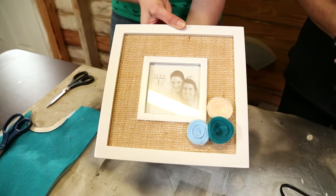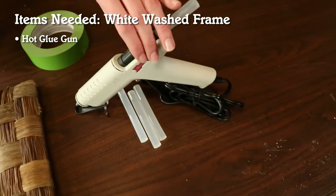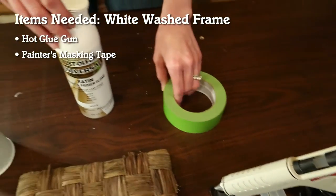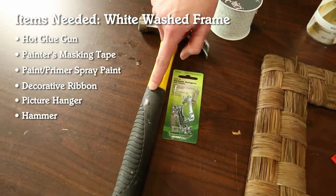Next up is our whitewashed picture frame. For this frame, we'll need hot glue and a glue gun, painter's tape, some white spray paint, a decorative ribbon, and a picture hanger and hammer.